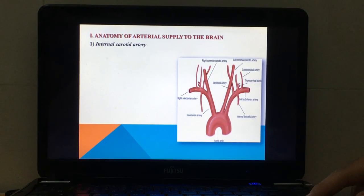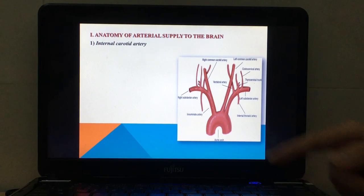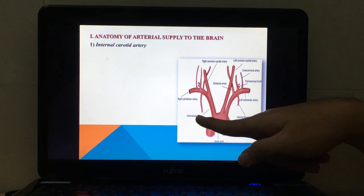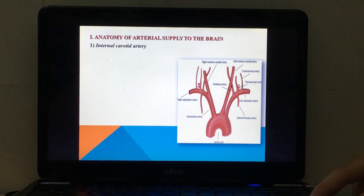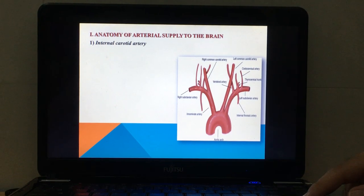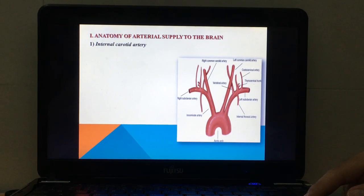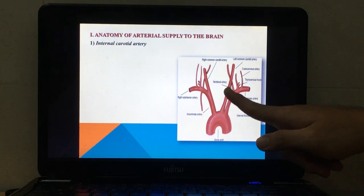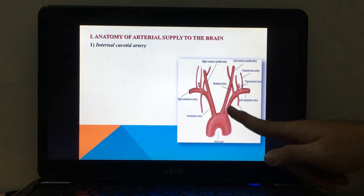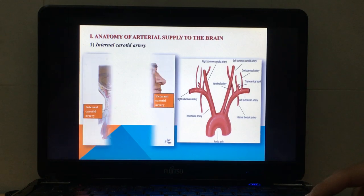They derive from the brachiocephalic trunk artery, or we can call it the innominate artery, which is one of three large branches of the aortic arch, accompanied with the left common carotid and the left subclavian artery.